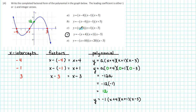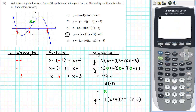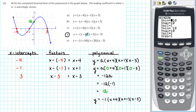To verify our answer, we can use a graphing calculator. First, we go to y equals to enter the equation. We enter minus the factor x plus 4 times the factor x plus 1 times the factor x minus 3. Next, we adjust our window settings. On the given graph, we see that the x values range from negative 5 to 5 with a scale of 1. So we'll change x minimum to negative 5, x maximum to 5, and x scale to 1.